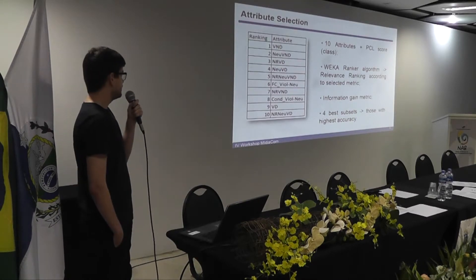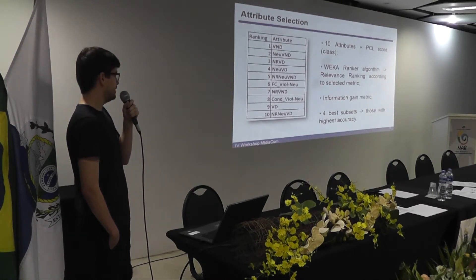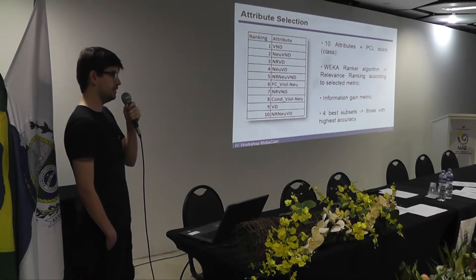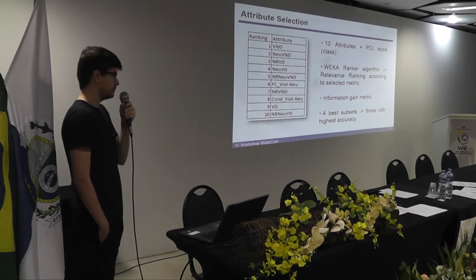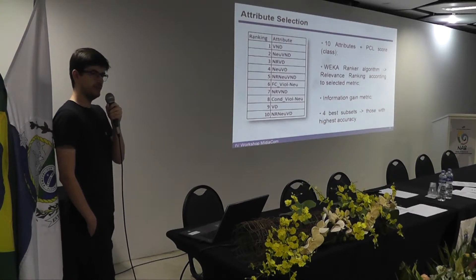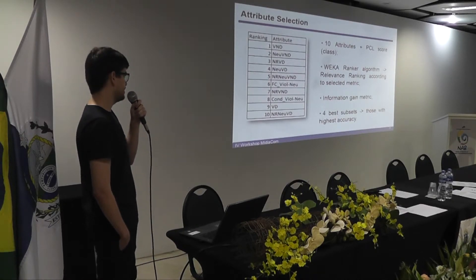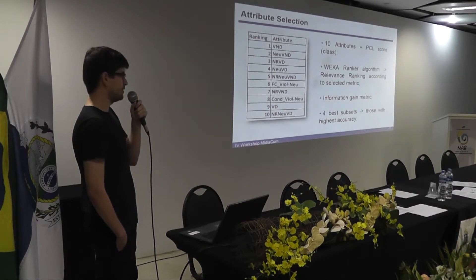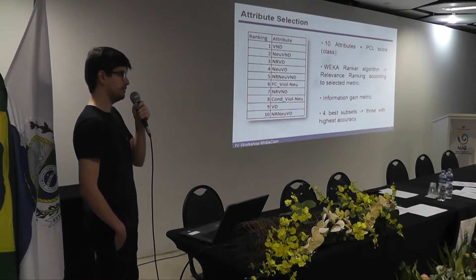In attribute selection, these techniques select a subset of attributes. In our dataset we have ten attributes plus the class attribute — the PCL score. We used an algorithm called Ranker, which returns a relevance ranking according to a selected metric. In our work we used the information gain metric and selected the four best subsets — those with the highest accuracy. We did this by analyzing just the first attribute of the ranking, then first and second, first through third, and so on until all attributes were used, then selected the four best subsets.